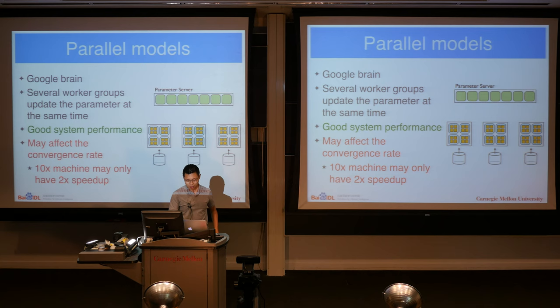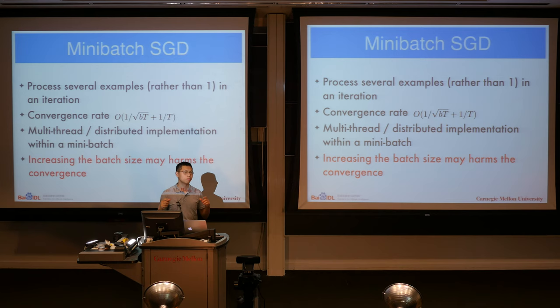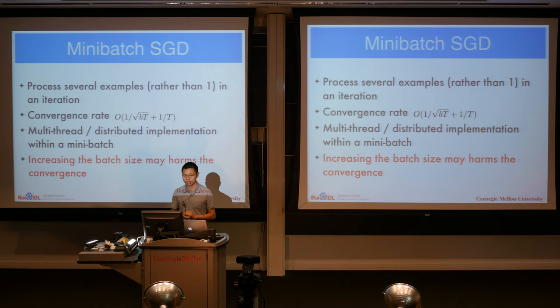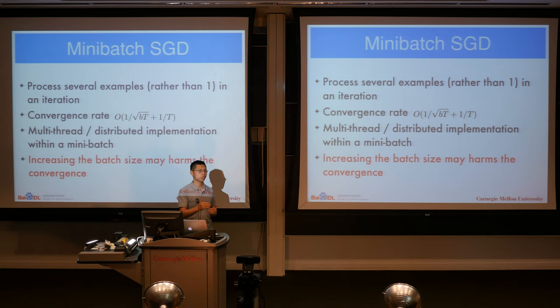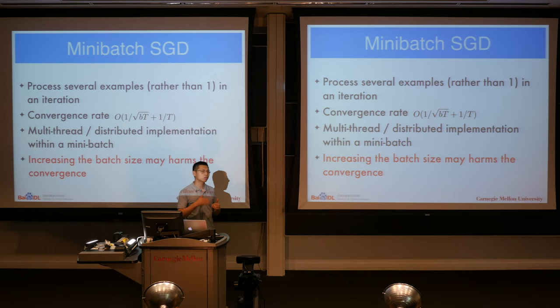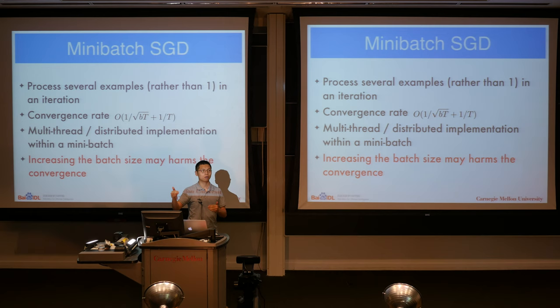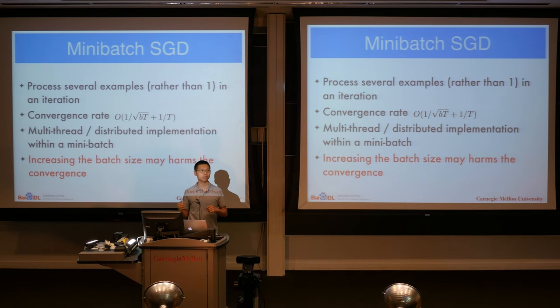The second idea is similar to block coordinate descent: rather than processing one example per iteration, process a block of examples — a mini-batch. This increases workload per iteration, allowing multi-threaded or distributed implementation within the mini-batch using techniques discussed previously. However, increasing mini-batch size may decrease convergence rate. In the extreme case, if mini-batch size equals the full training data, you have standard gradient descent, which is slower than SGD.